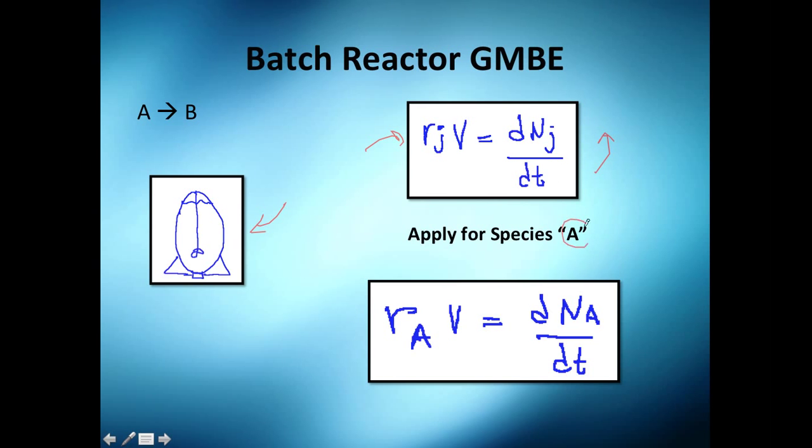And let's apply it for species A. So instead of j we're going to substitute for A, so I got rate of reaction of A times the volume will give me the differential amount of moles of A per time.